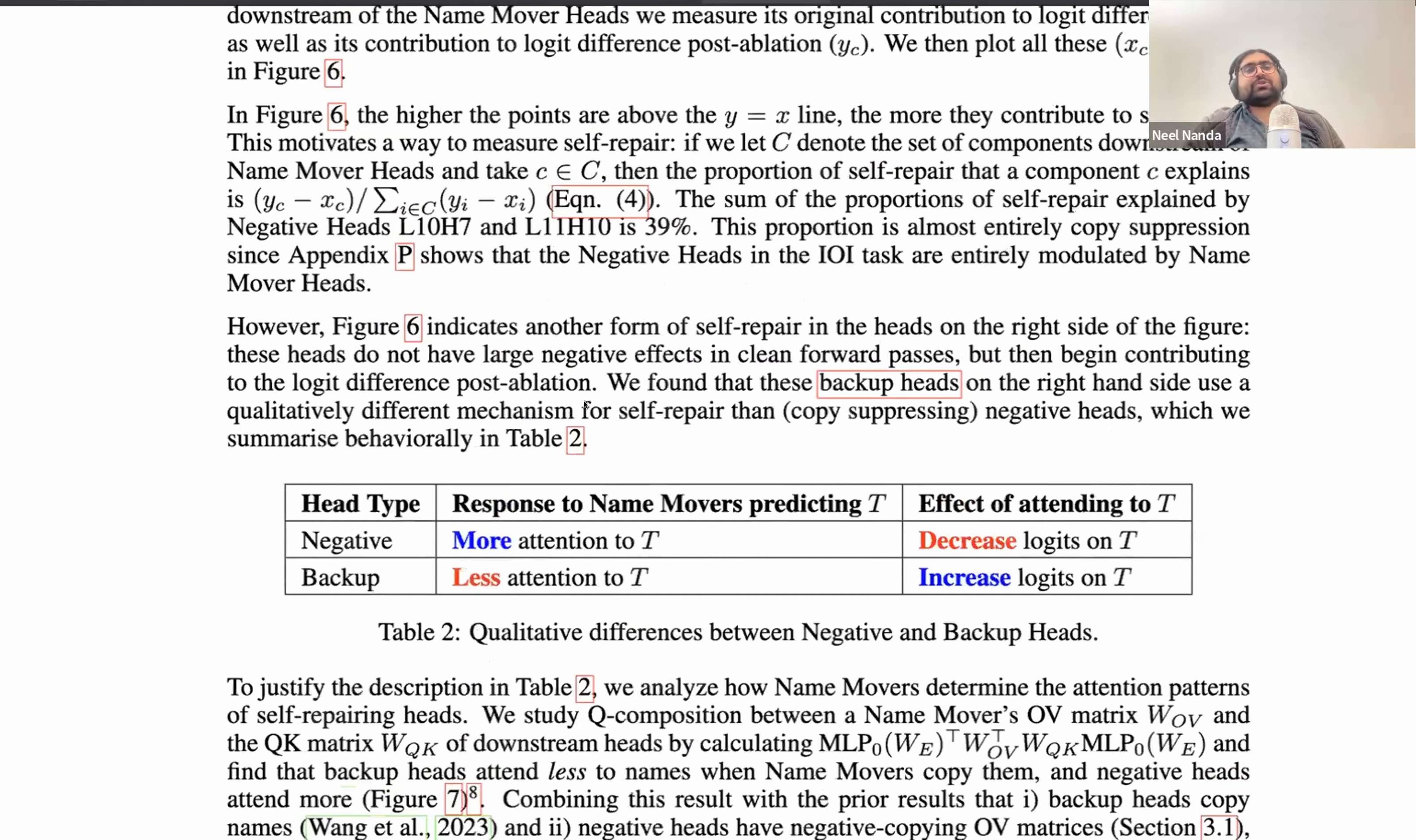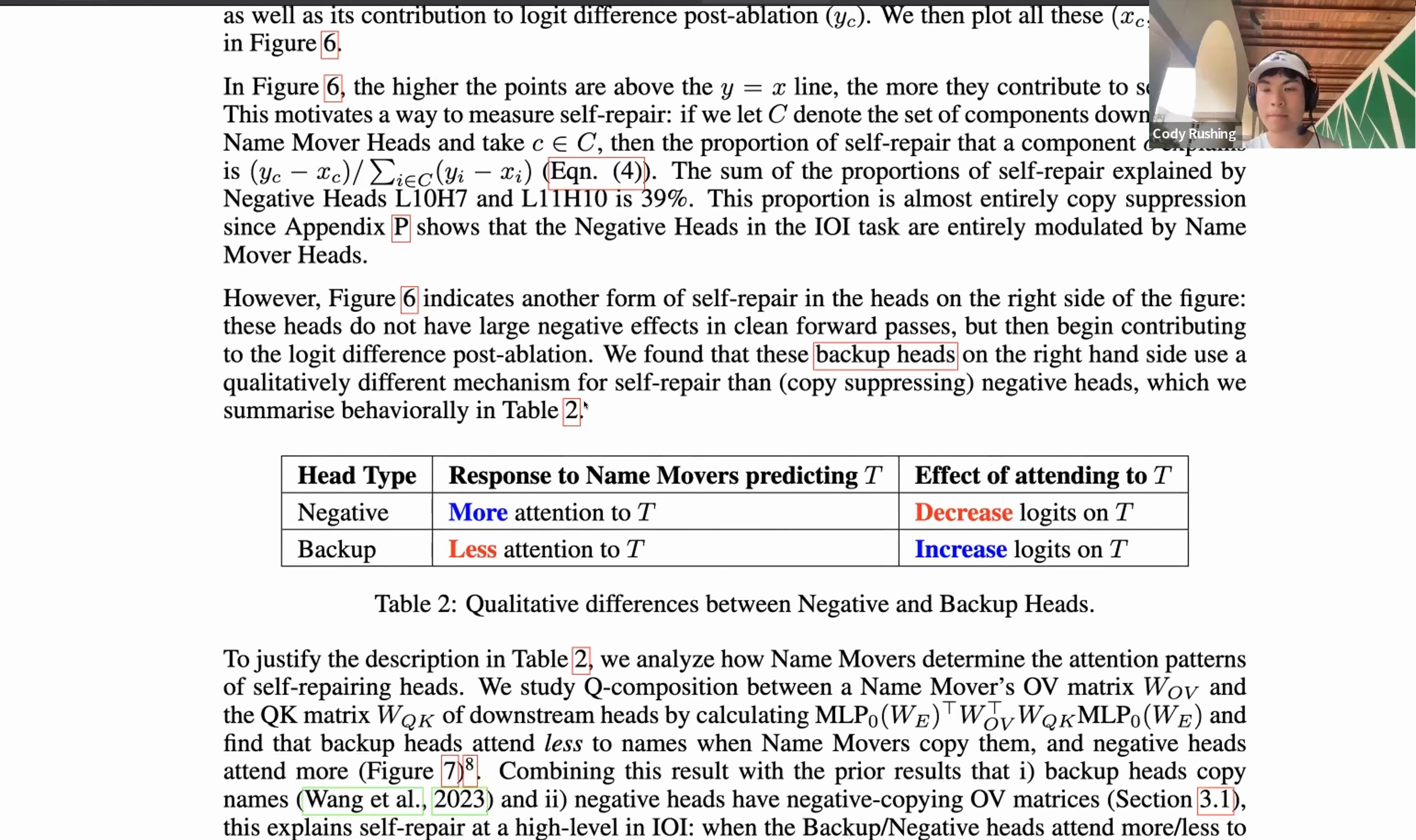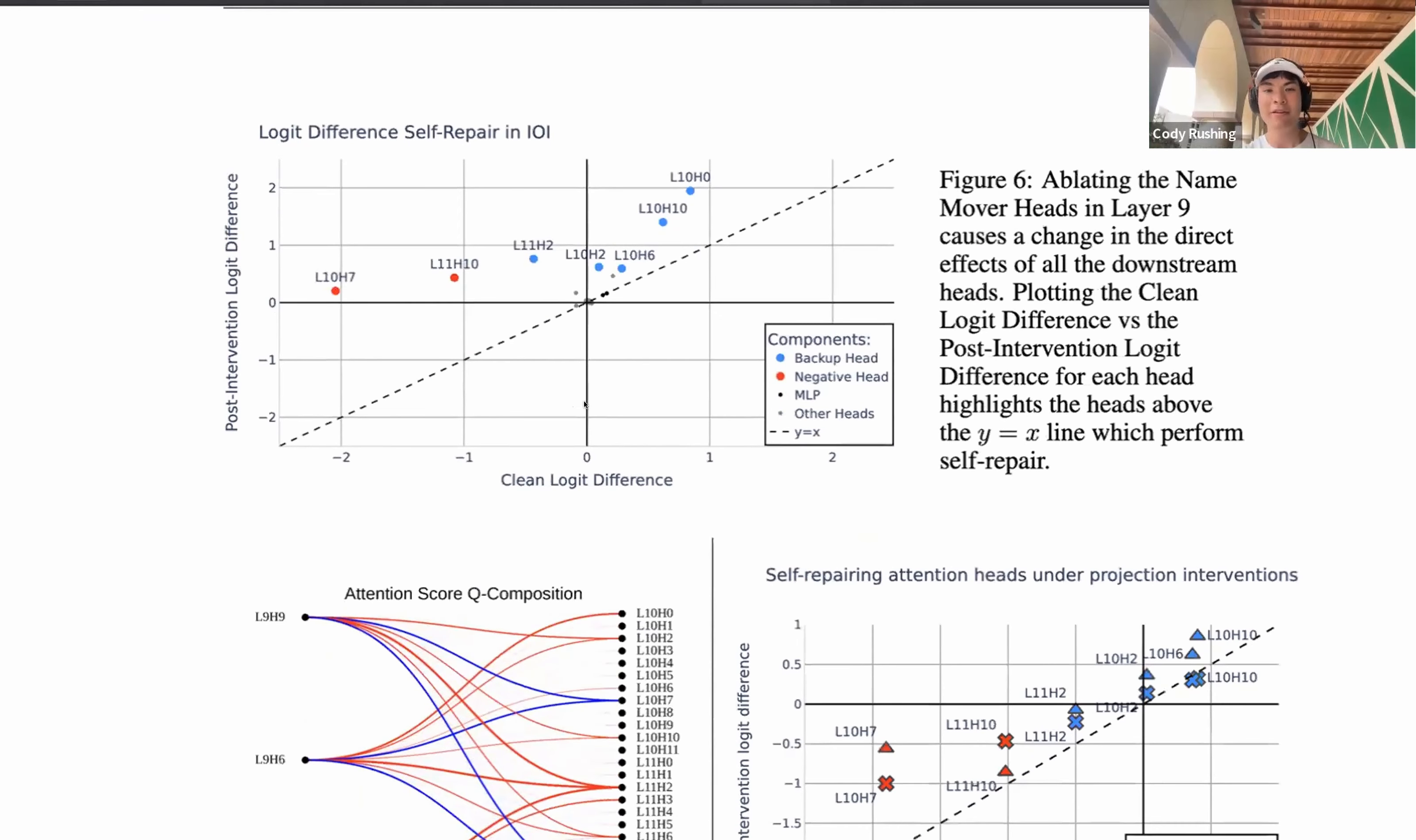And in our paper, we end up capturing both of these, both observationally and via like the matrix analysis. But then the IOI task, the negative heads are defined by originally attending to a token T because the name movers do so, but writing against it. Whereas the backup heads don't attend to the token T at all, but upon ablation of name mover heads, attend to it more, and thus increase the logits on T. What you've got there is backwards of what's in your graph, because you're saying negative heads look at the indirect object when the name movers look at it, which means that when you delete the name movers, negative heads look at the indirect object, Mary, less. Well, backup looks at it more. And backup copies whatever it looks at, so it starts looking at Mary and it's happy. Negative suppresses whatever it looks at, so it stops looking at Mary and it's happy. And it's like a one times one situation versus a minus one times minus one situation. And they all culminate in the final result of just self-repair.